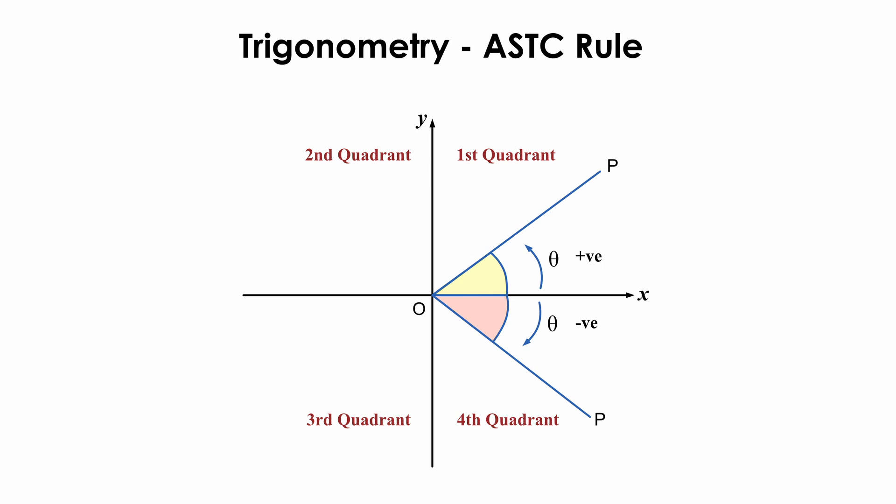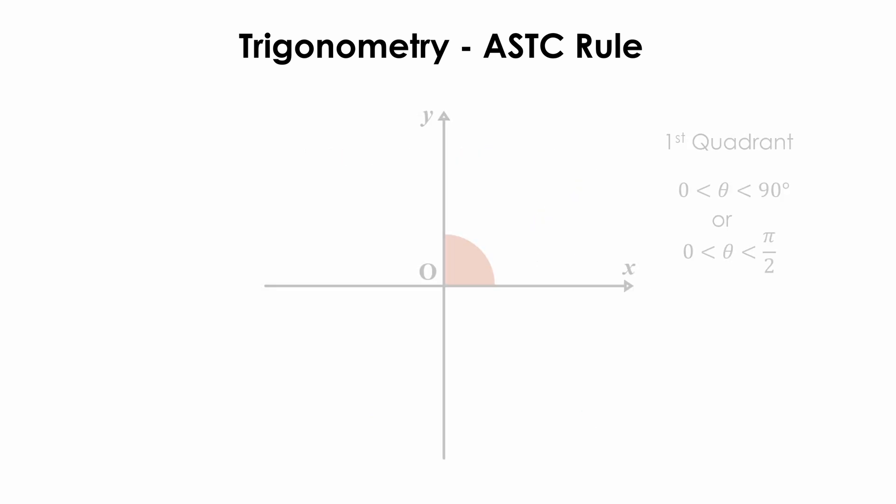Angles measured in an anti-clockwise direction from the positive x-axis are positive, while angles in a clockwise direction are negative. The angles which lie between 0 degrees and 90 degrees, or between 0 to π/2, are said to be in the first quadrant.